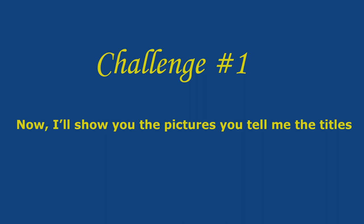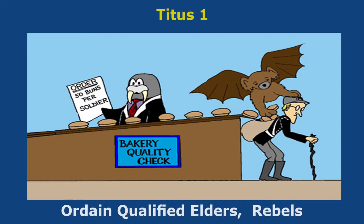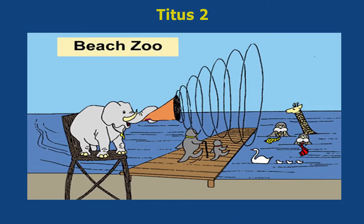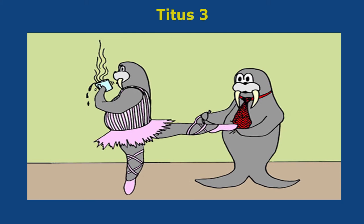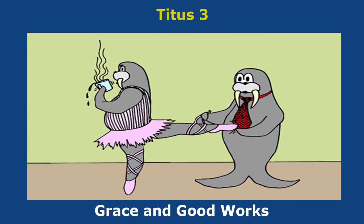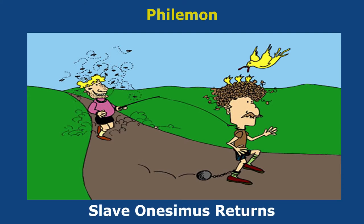Now you're ready for challenge number one — I'll show you the pictures, you tell me the titles. Titus chapter one is Ordain Qualified Elders, Rebels. Titus chapter two is Sound Doctrine for Young and Old. Titus chapter three is Grace and Good Works. Philemon chapter one is Slave Onesimus Returns.